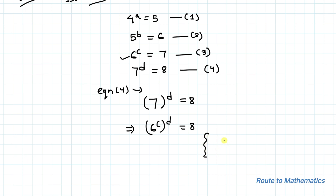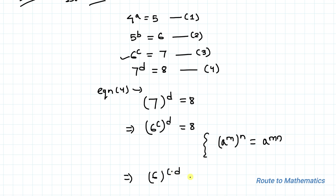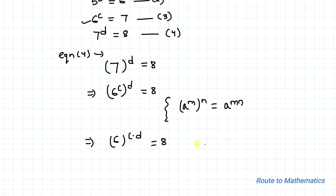We know the exponential rule that a to the power m, whole to the power n, equals a to the power m times n — meaning the powers get multiplied. Applying this rule, we get 6 to the power c times d equals 8.